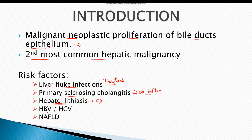Hepatitis B virus and hepatitis C virus infections also increase the risk of hepatocellular carcinoma as well as cholangiocarcinoma. Likewise, non-alcoholic fatty liver disease also increases the risk of both hepatocellular carcinoma and cholangiocarcinoma.